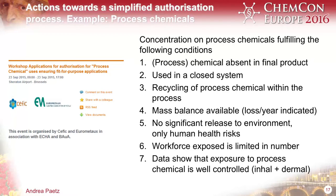What are the main boundaries if you ask for simplification? One key point is the absence of the chemical in the final product. You have to use the substance in a closed system. The recycling of the process chemical has to be in-process. If possible, a mass balance should be available. There should be no significant release to the environment — if there is a really small release it may be possible — and the workers should not be exposed. You have to show that everything is really well controlled.